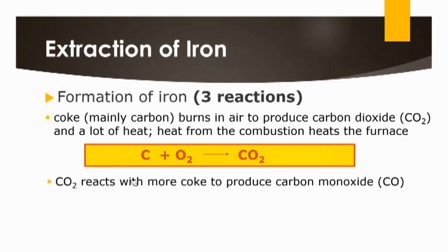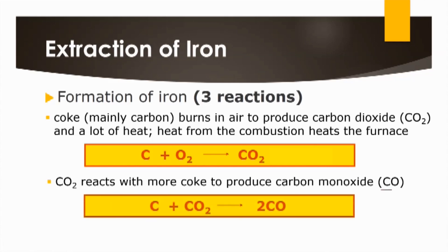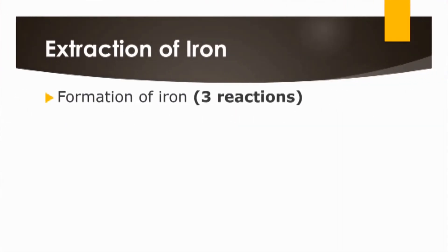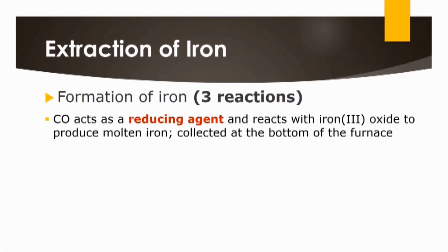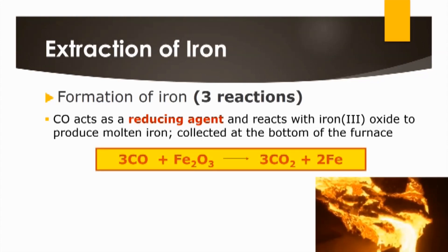This carbon dioxide then reacts with more coke to produce carbon monoxide — note it is now carbon monoxide, not carbon dioxide. This is reaction number two. This carbon monoxide is important for the subsequent reaction that removes iron from hematite. In the third reaction, carbon monoxide acts as a reducing agent and reacts with iron oxide (Fe₂O₃) to produce molten iron, which is collected at the bottom of the furnace.